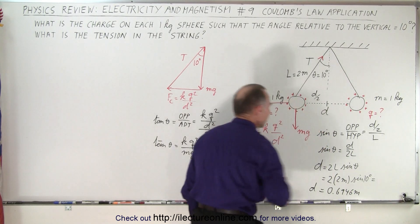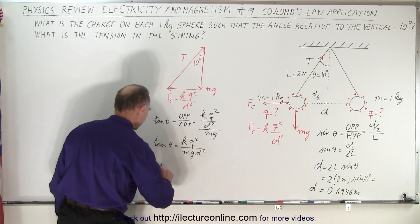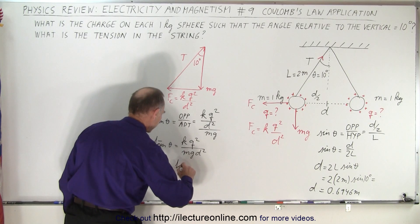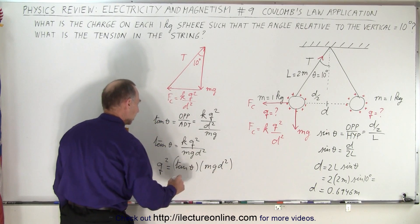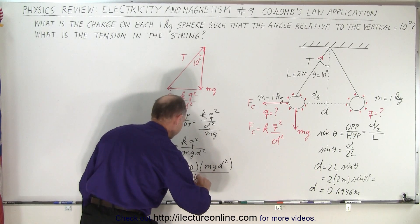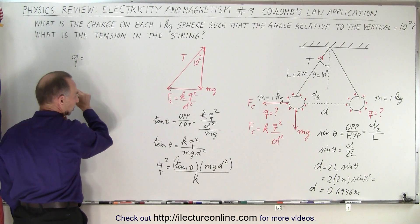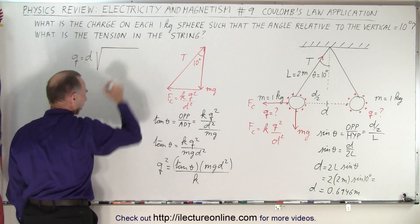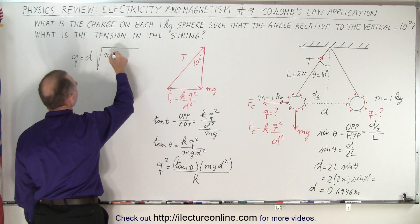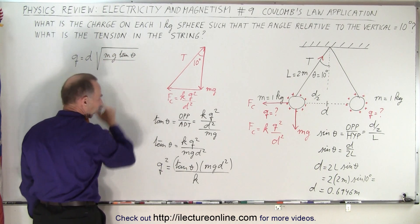So now that we have D from the geometry, we can then go in here and solve this for Q. So we have Q squared is equal to the tangent of theta times mgD squared, and divide all that by K. And then if we take the square root of that, we can then say that Q is equal to D times the square root of mg times the tangent of theta divided by K.